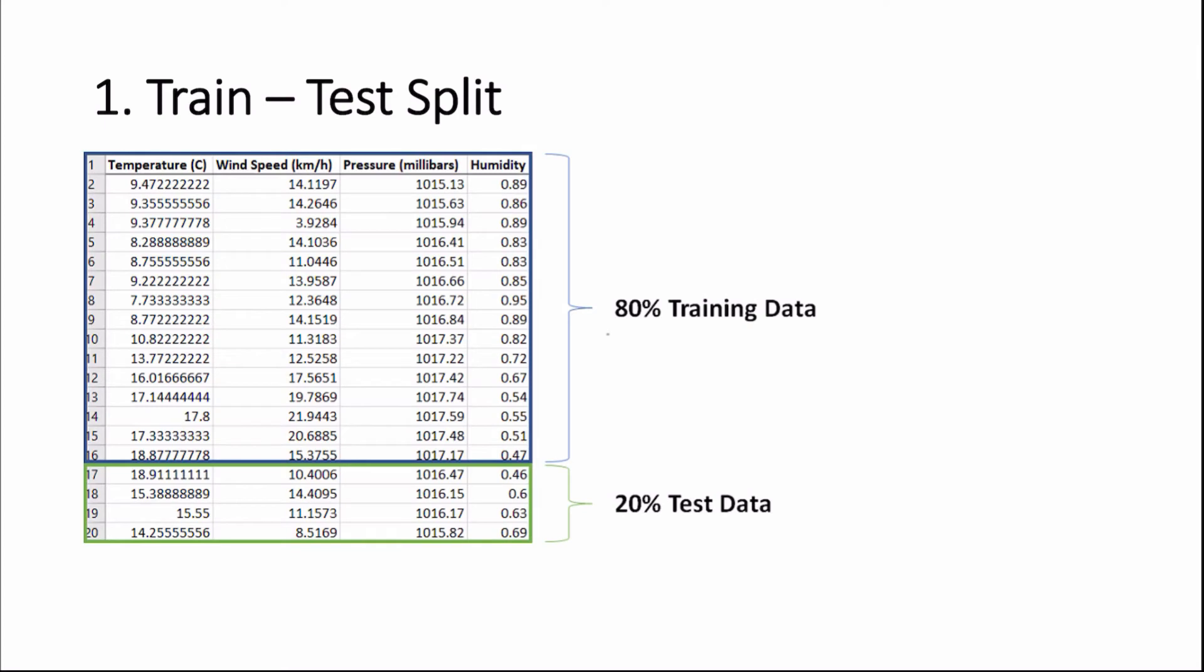So with the train-test-split method, we simply take a fixed amount of training data and a fixed amount of test data. We build our model on this training data and then check its performance on the test data. And the way in which we can test our model's performance is by looking at the cost function.